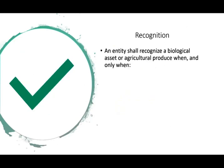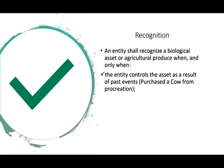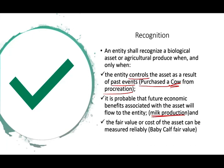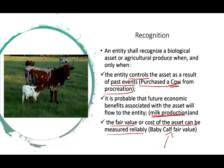Recognition: an entity shall recognize a biological asset or agricultural produce when the following exist — basically like any asset. First, the entity controls the asset as a result of a past event, for example by purchasing or procreating a cow. Second, it is probable that future economic benefits will flow to the entity, such as milk production. Third, the fair value or cost of the asset can be measured reliably.